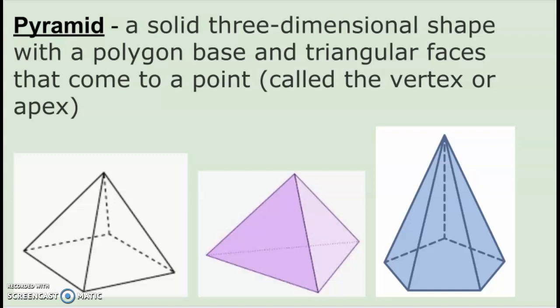A pyramid is a solid three-dimensional shape with a polygon base and triangular faces that come to a point. That point is called the vertex or apex. As you can see from the examples that are shown, not all pyramids look exactly the same.